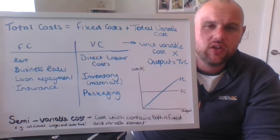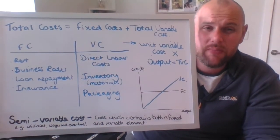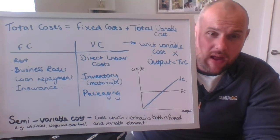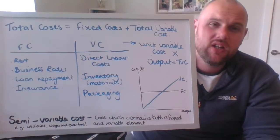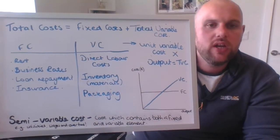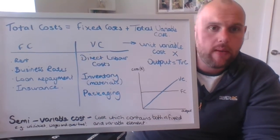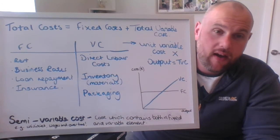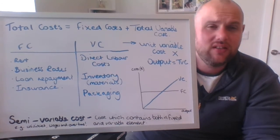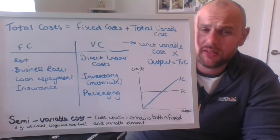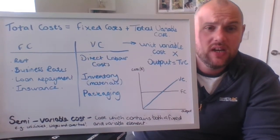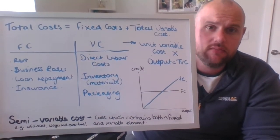So let's start with what costs are. Well, costs are things the business has to pay for. It's revenue expenditure that it pays for in its day-to-day running. It's not spending money on equipment, buildings, fixtures and fittings, or vehicles — those are capital expenditure items. When we talk about costs, we're really talking about revenue expenditure items.